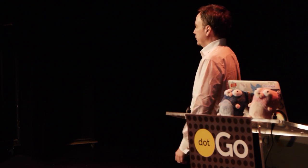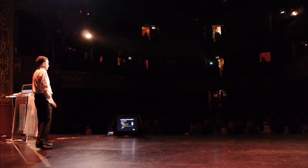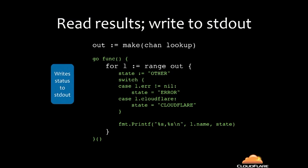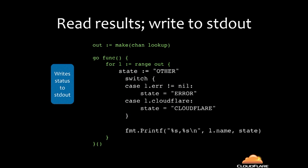For outputting, I use a WaitGroup to wait for everything to be cleaned up. This is a command-line program so I could have just exited, but it's nice to clean up. Writing the results is easy — you just range over the output channel, reading all the stuff coming out of those worker goroutines in the middle, and do a switch statement to figure out what to print: on Cloudflare, error, or whatever.